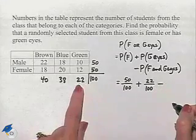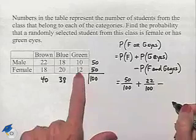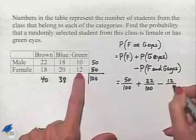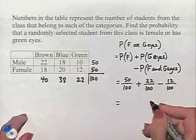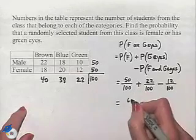Minus the probability of selecting a female with green eyes, and that's going to be right here in the chart, 12 out of 100. Now we combine the numerators and that's going to give us a value of 60 out of 100.